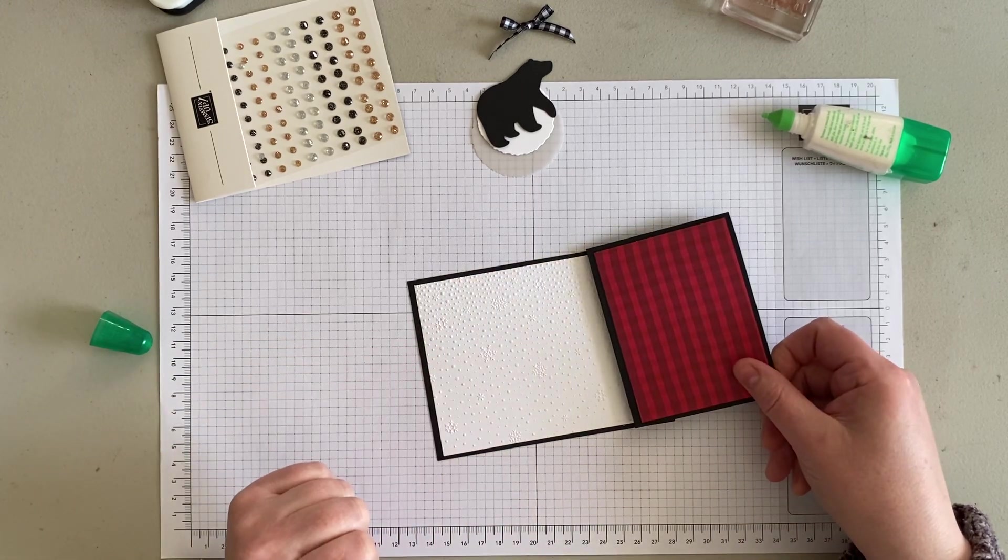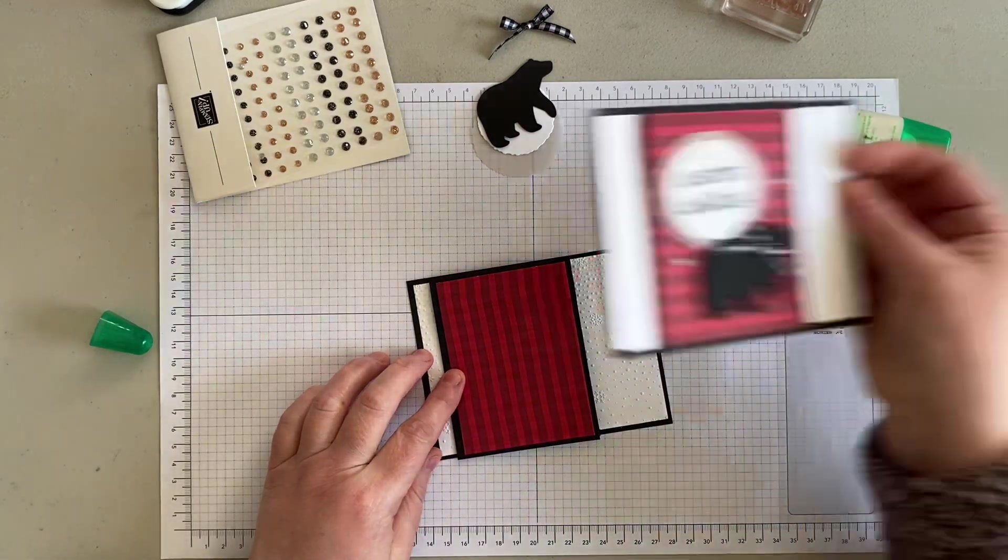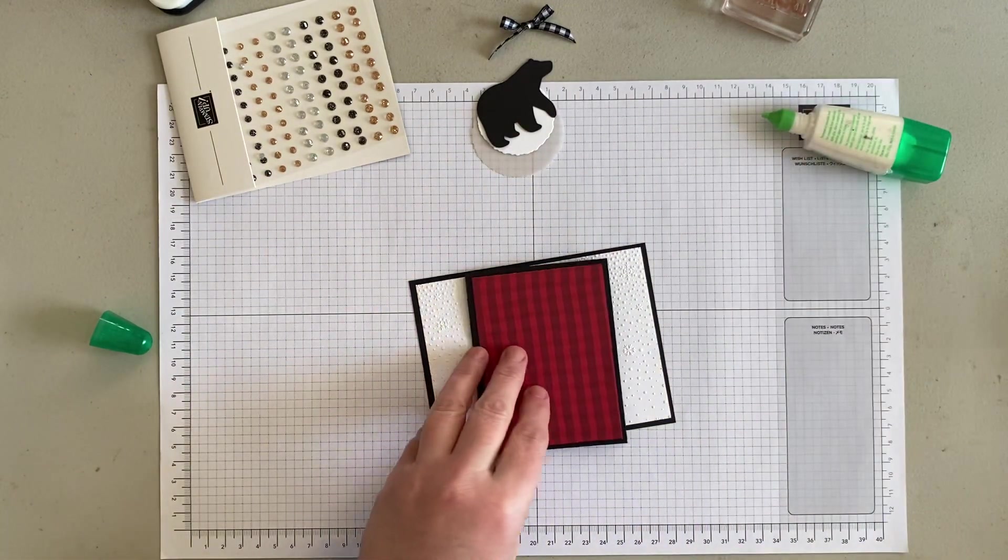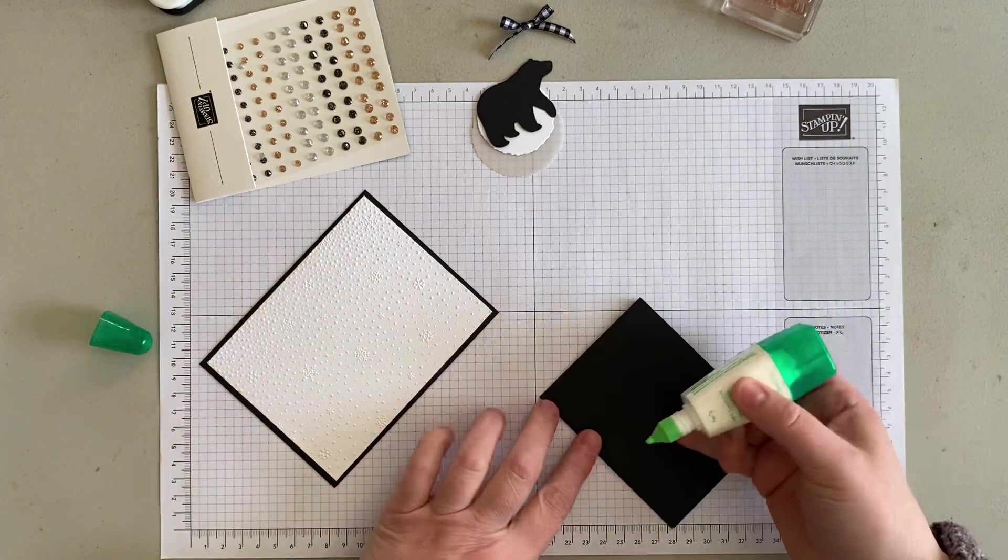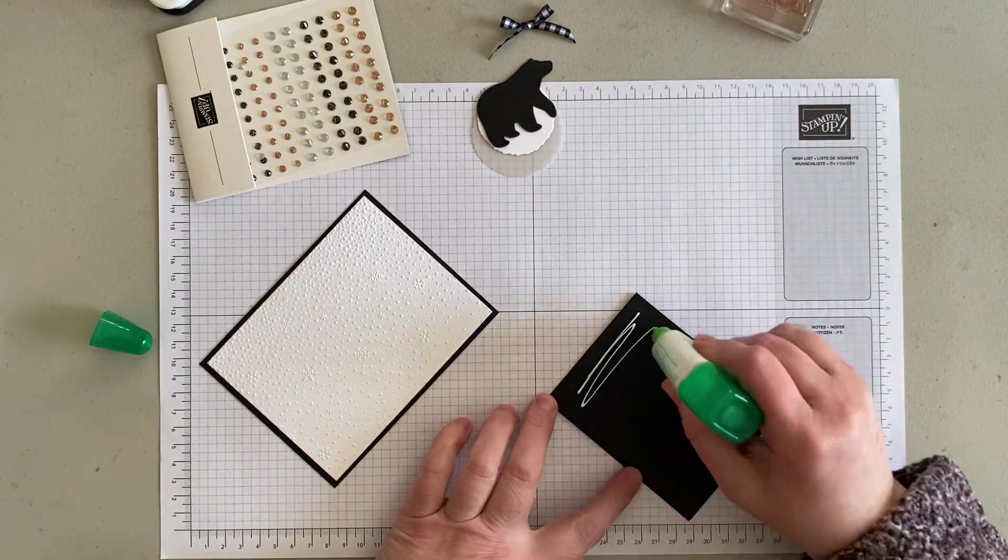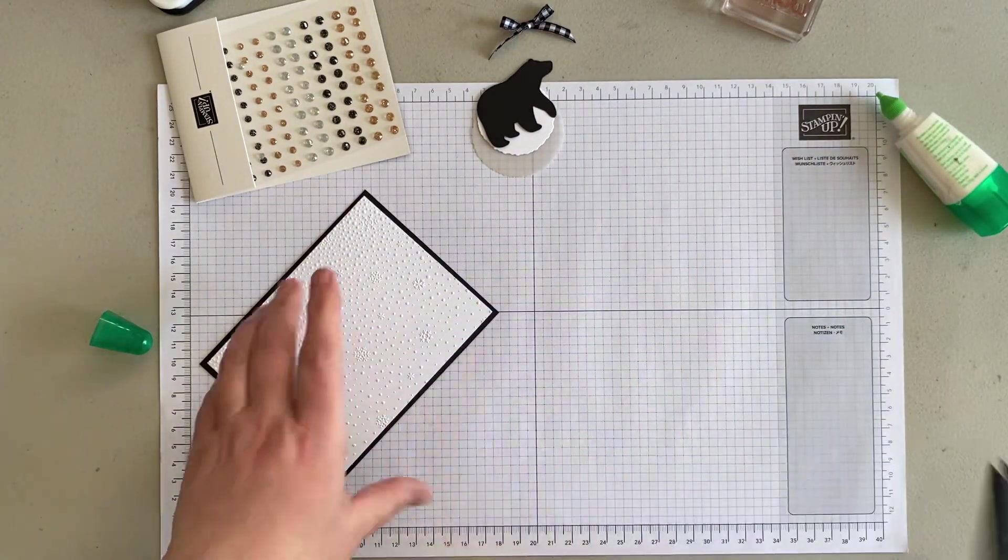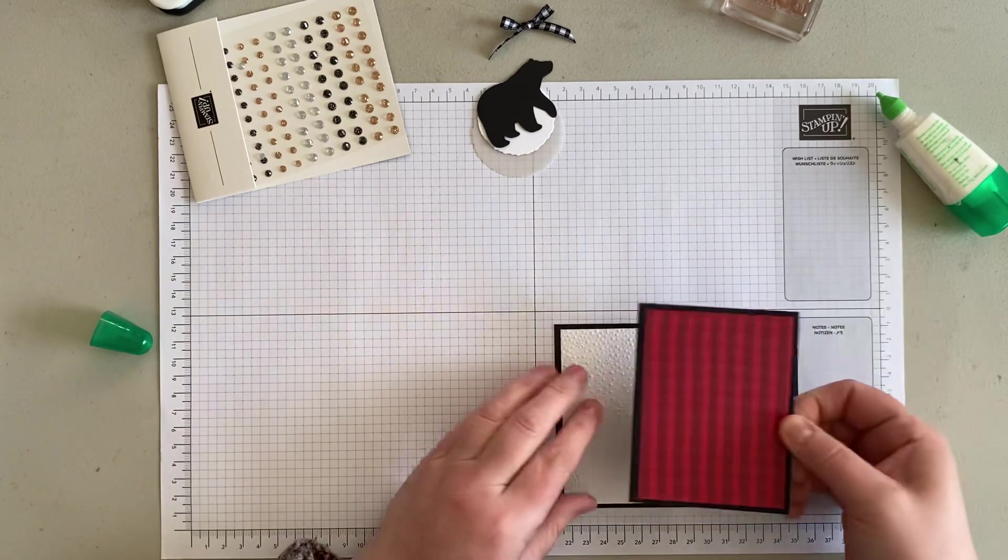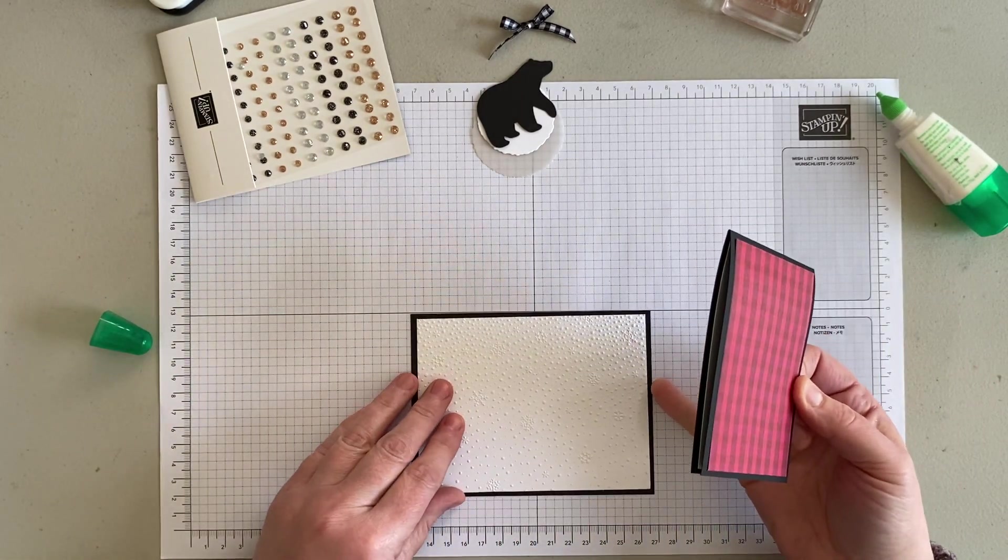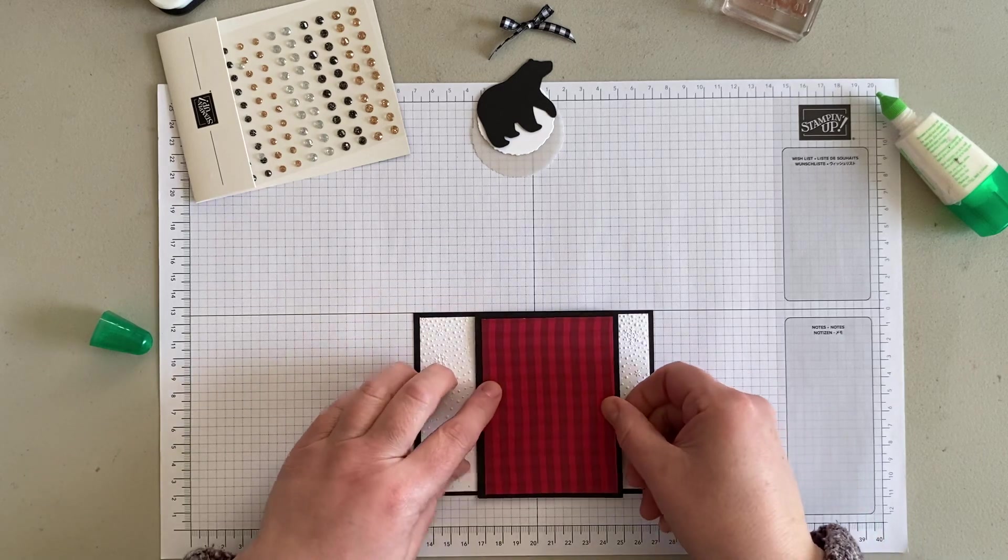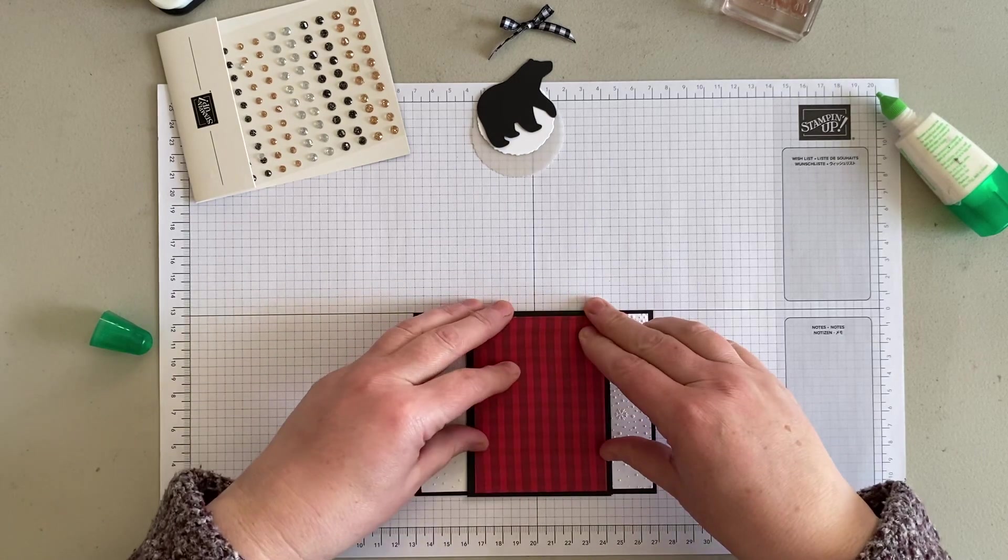When I saw the card from Cheryl, she had put hers to the side, so I did that on mine. I think this time I'm going to put it in the center just to show you a slight difference. I want to use the grid marks, but I don't want to count them, so I'm just going to eyeball.